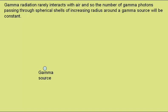Let's show that with a diagram. Here we have a gamma source, and if I draw a sphere of radius R around this, as virtually none of the gamma radiation will be absorbed by the air in this sphere, all the gamma photons emitted by the source will have to pass at some point through this spherical shell.